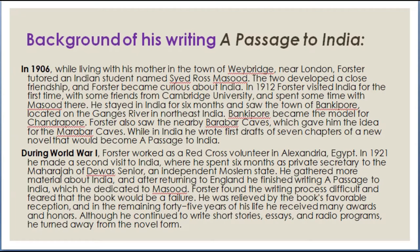Background of his writing A Passage to India: In 1906, while living with his mother in the town of Weybridge near London, Forster tutored an Indian student named Syed Ross Masood. The two developed a close friendship and Forster became curious about India. In 1912, Forster visited India for the first time with some friends from Cambridge University and spent some time with Masood there. He stayed in India for six months and saw the town of Bankipur, located on the Ganges River in Northeast India. Bankipur became the model for Chandrapur in the novel. Forster also saw the nearby Barabar caves, which gave him the idea for the Marabar caves in his novel A Passage to India.